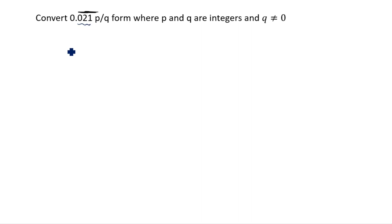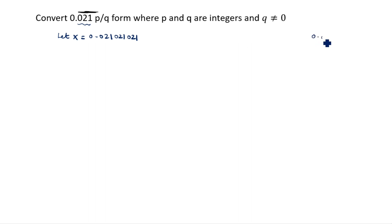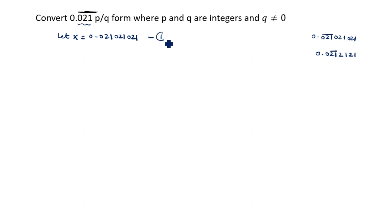Here you see three digits bar is given. So let x is equal to 0.021 bar — three digits — so 021 021, that is 0.021021... We write this as equation one. If the bar were on only the first two digits, you would write 2121 instead.